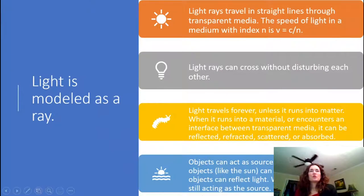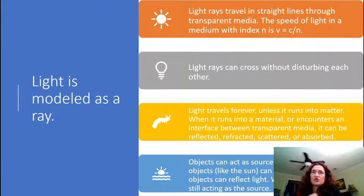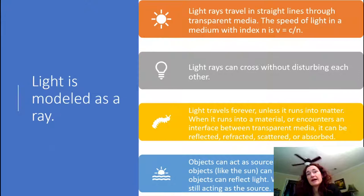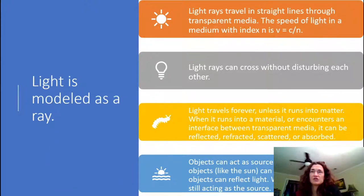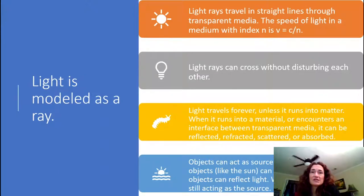So we model light as a ray. Light rays travel in straight lines through transparent media. Until the light encounters some kind of boundary or another material, it'll just keep traveling in that straight line. The speed of light in a medium with index of refraction n is v = c/n.